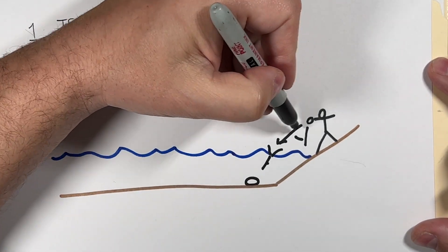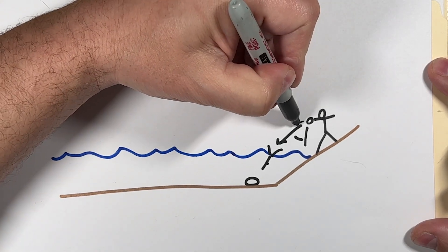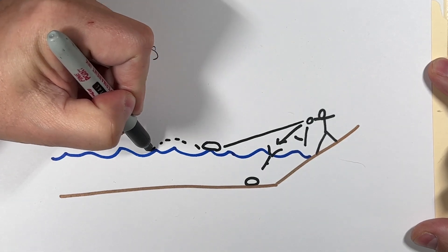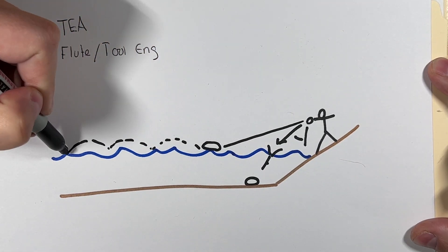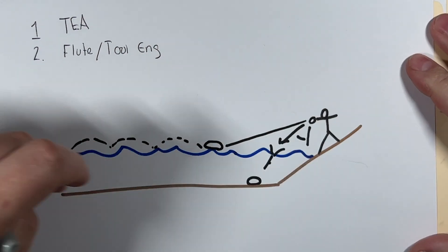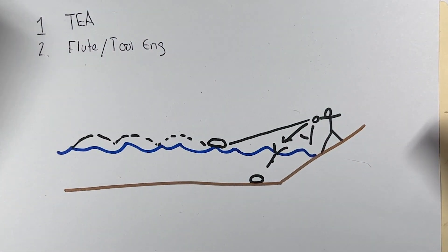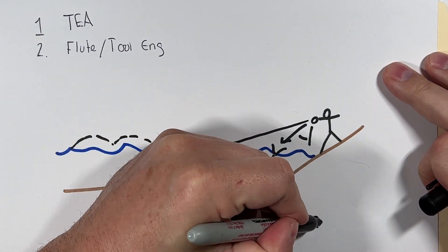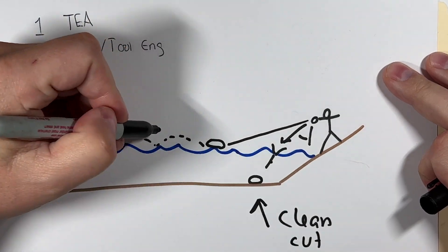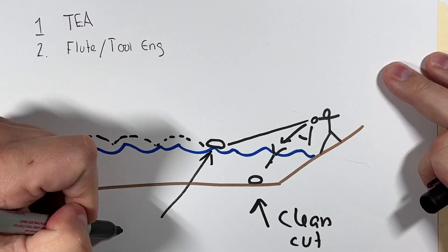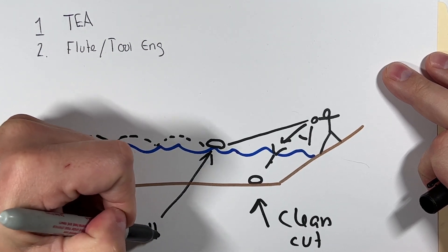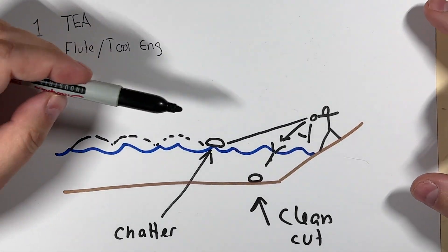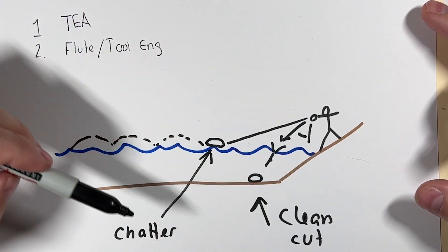But if you took that rock and you threw it at just the right angle and the rock was just flat enough, you would then get this skipping effect. And so I think this one concept is really important to understand because this situation ends up in a clean cut and this situation over here ends up in incredibly problematic chatter.